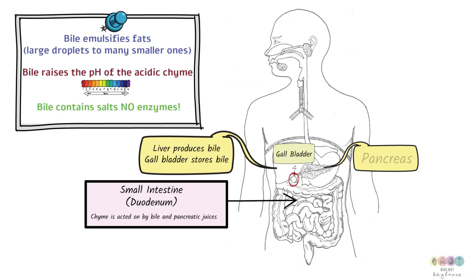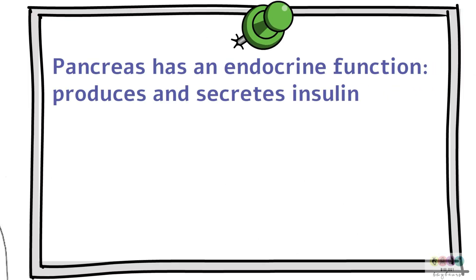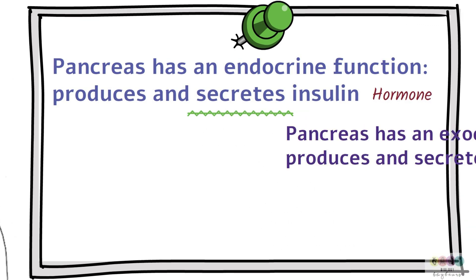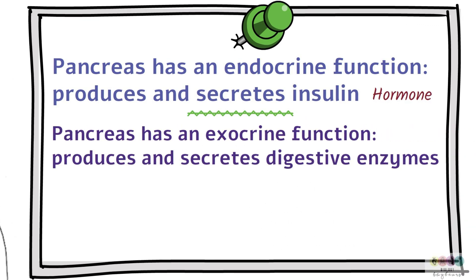As well as the bile acting on the chyme, there are secretions from the pancreas also. The pancreas has an endocrine function. It produces and secretes insulin. Insulin is a hormone. The pancreas also has an exocrine function. Meaning that it produces and secretes digestive enzymes. And exocrine means into a tube. In this case the pancreatic duct.